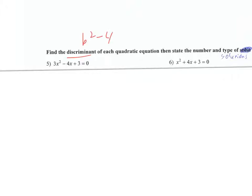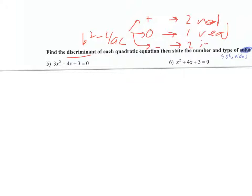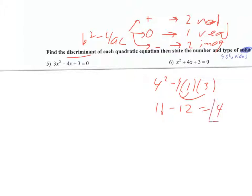Next, they want us to find the discriminant. The discriminant is B squared minus 4AC, and it tells us how many solutions we have. If it's positive, we get two real solutions; if it's zero, one real solution; if it's negative, no real solutions — or two imaginary solutions. Here we get four squared minus four times one times three, which is 16 minus 12, equaling four. Since it's positive, we get two real solutions.